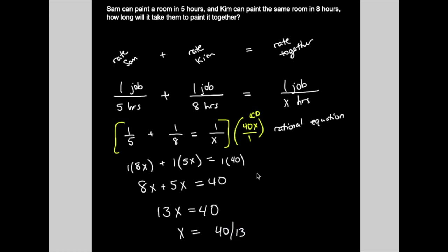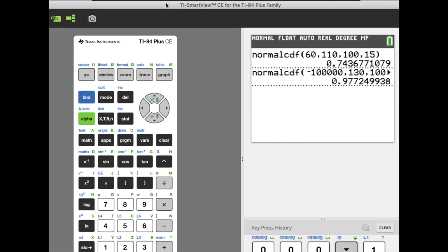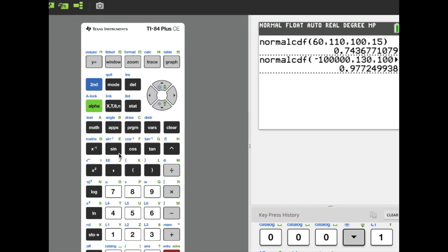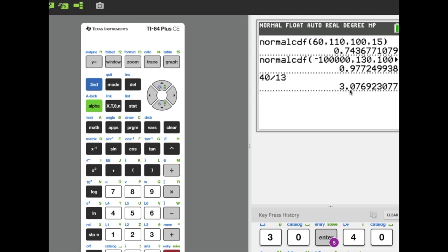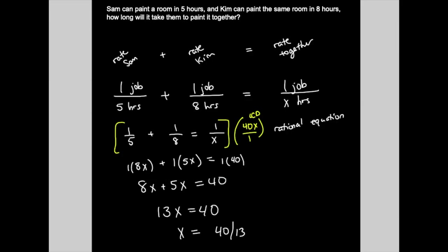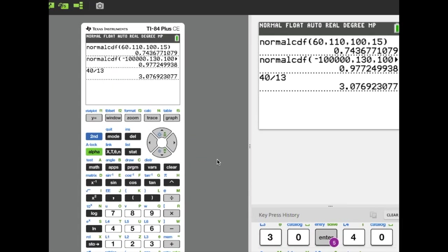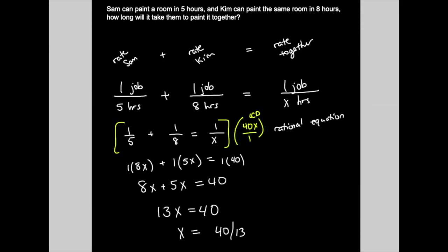Now, it all depends on what you're asked for. Do you want to leave it as a fraction or do you want to actually write it out as a decimal, 40 divided by 13? So, I'm going to say 3 point, depending on rounding, let's say 3.1, we're rounding to the nearest 10th, one decimal.